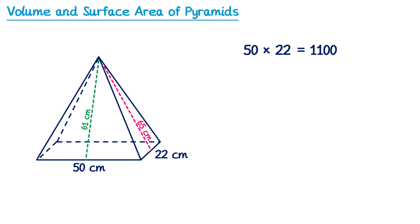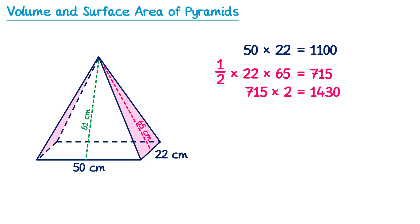Then we'll look at this triangular face here: one half multiplied by the base, 22, multiplied by its height, 65, gives 715. The triangular face opposite this one is also the same size, but the other two faces are not. So we only have two of these triangles — we multiply 715 by 2, giving 1430.